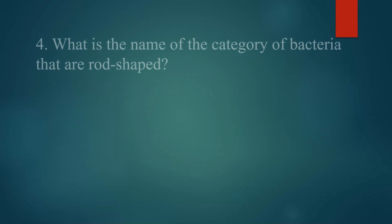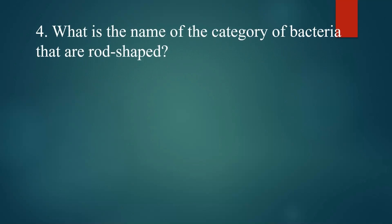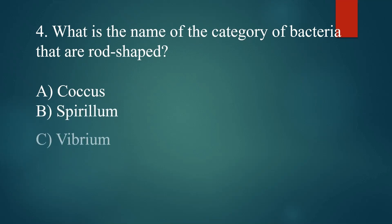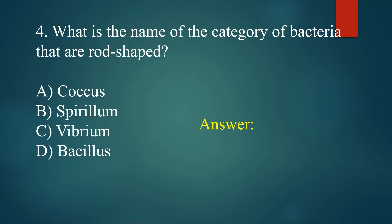What is the name of the category of bacteria that are rod-shaped? A. Coccus. B. Spirillum. C. Vibrio. D. Bacillus. Answer: D. Bacillus.